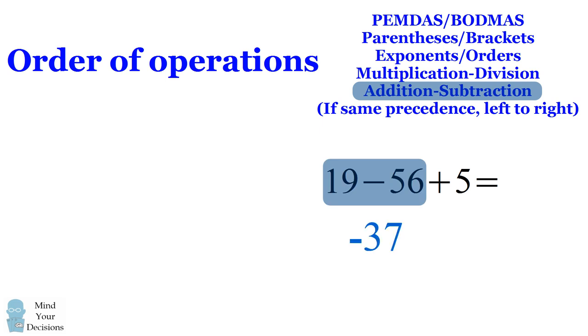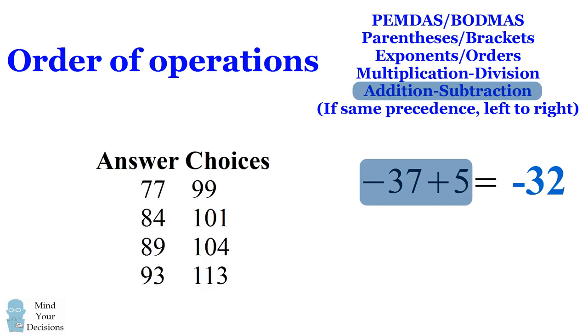19 minus 56 is negative 37. And finally, negative 37 plus 5 is equal to negative 32. And that's the correct answer to this expression. And you'll notice this is not amongst the answer choices.